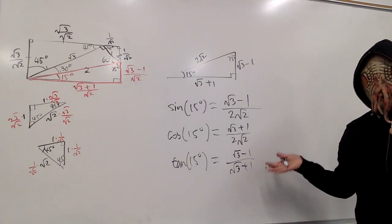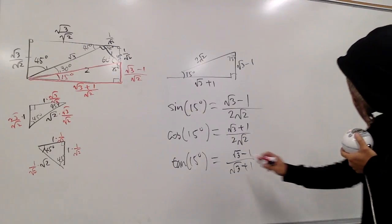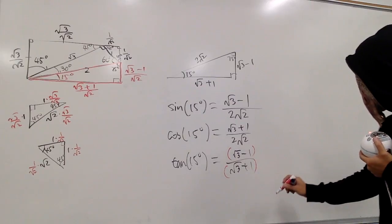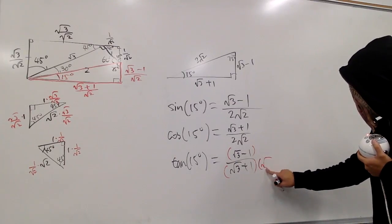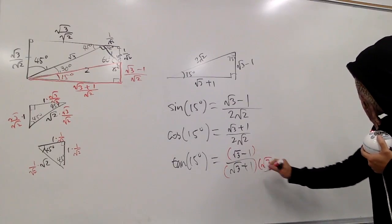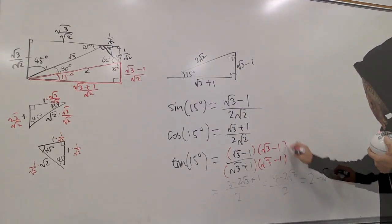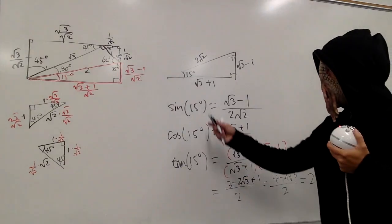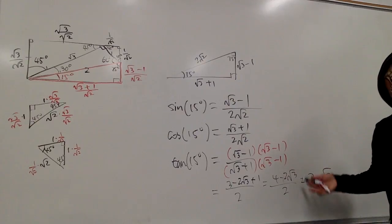For this one, let me rationalize the denominator because this is the harder one. I will multiply the top and bottom by the conjugate, which is square root of 3 minus 1, and do the same on the top. The result is 2 minus square root of 3. So that's sine, cosine, and tangent of 15 degrees.